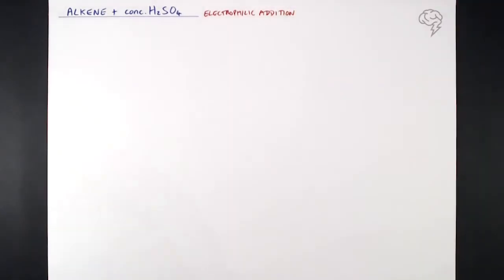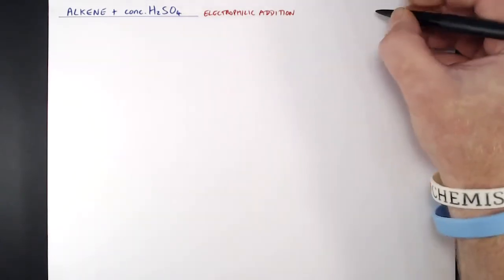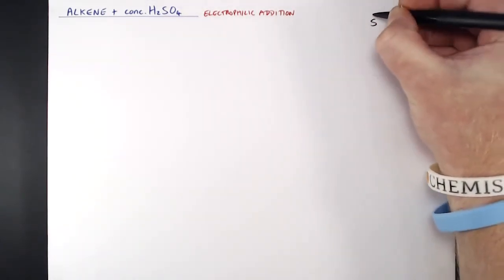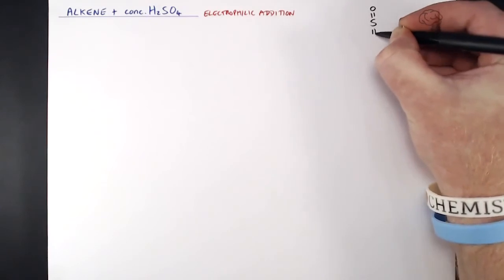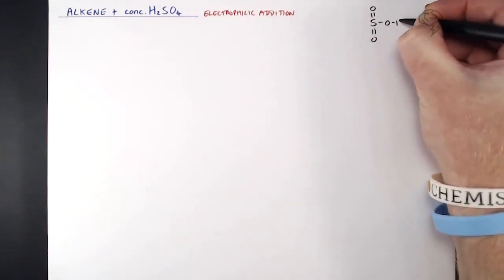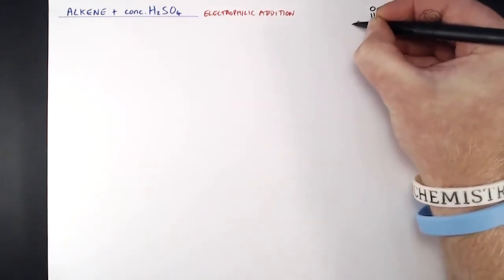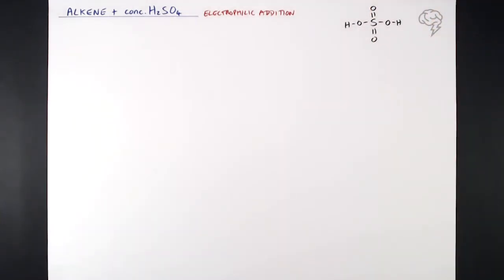Now before we get going, I want to show you what the structure of sulfuric acid actually is. We've got a central sulfur atom, we've got two double bonded oxygens coming off that, and then we've got two OH groups coming off that as well. So that's actually our structure of sulfuric acid. It's really important that you understand that so we can look at what part of that is actually an electrophile.